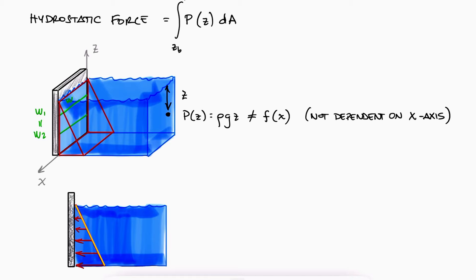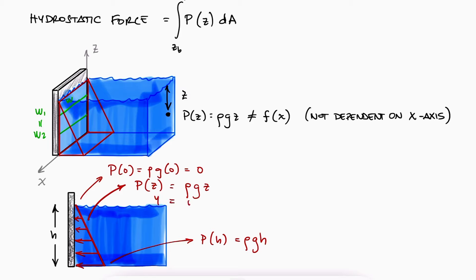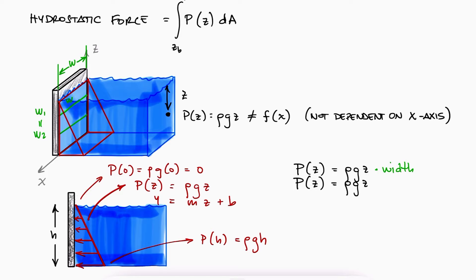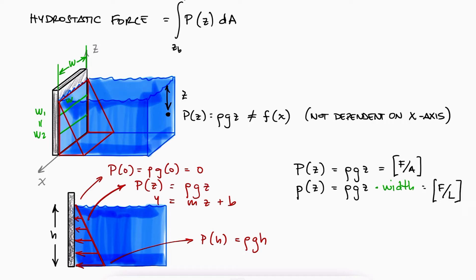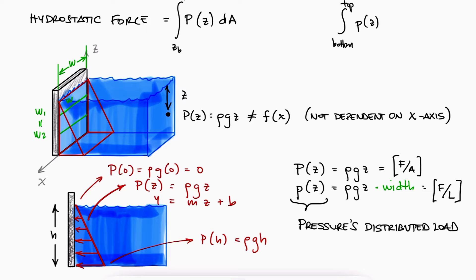The diagonal of this triangular load would be a straight line that goes from zero to rho g h, with a slope equal to the specific gravity. With this 2D simplification — multiplying by the horizontal axis dimension, which is a constant — we get new units for the pressure as force per length, consistent with a typical distributed load. The integral from top to bottom of the distributed load p times dz would be the area under the curve of the triangle.